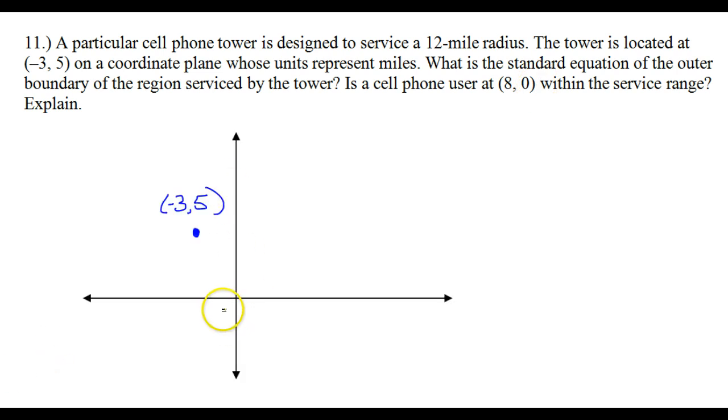Well, here are some rough axes, and here is the point negative 3, 5. They asked us to write an equation, and so given the radius—because they said right there 12-mile radius—we should be able to write an equation easily.